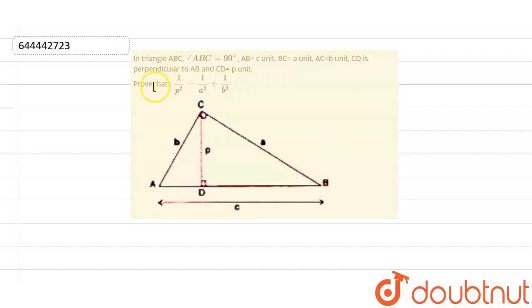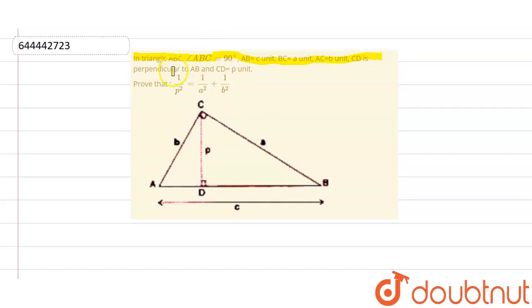Welcome to Doubtnut. The question given to us: in triangle ACB, angle ACB is equal to 90 degrees, AB is equal to c units, BC is equal to a units, AC is equal to b units, CD is perpendicular to AB, and CD is equal to p units. We have to prove this.